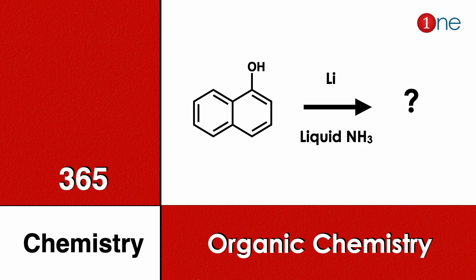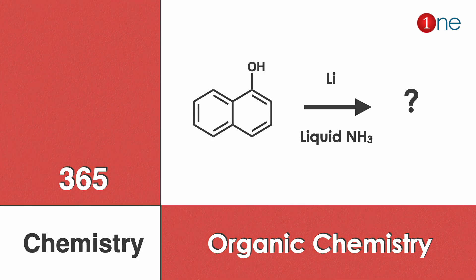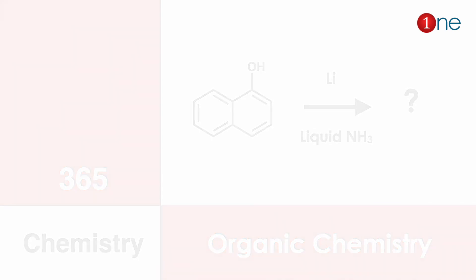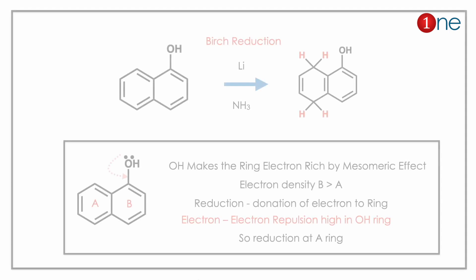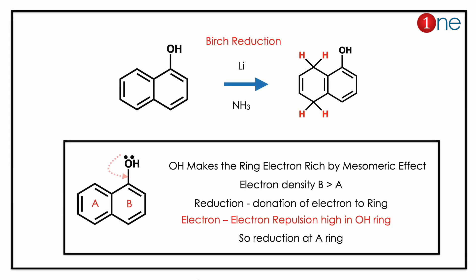Welcome to One Chemistry. This is the 365 Chemistry Series — organic chemistry questions. Here we have alpha-naphthol reacting with lithium and liquid ammonia. You need to find what the final product will be. This is a Birch reduction problem.